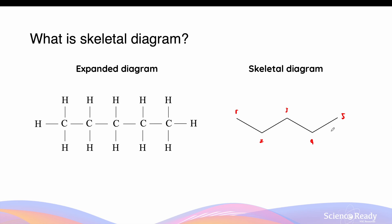We know that carbon has 4 valence electrons, meaning that it has the ability to form 4 bonds each. However, looking at the skeletal diagram, we can see that there is only 1 indicated bond per unit of carbon. This is because wherever we do not indicate a bond, we assume that there is a C-H bond in that position. Since there are no bonds indicated around the first carbon, there are 3 C-H bonds.